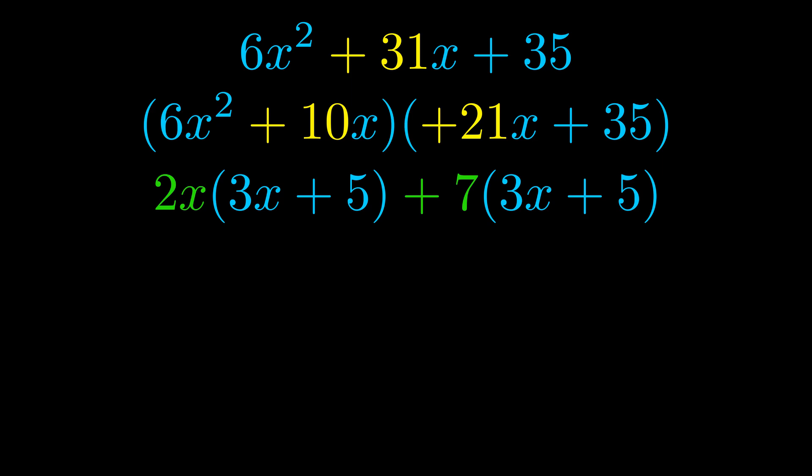Notice also how what remains inside of the parentheses is the same in both cases. The blue values are the same. Those blue values will become one of our factors and we will combine the two green values the GCFs that we pulled out to get the other one. And that is our fully factored equation.